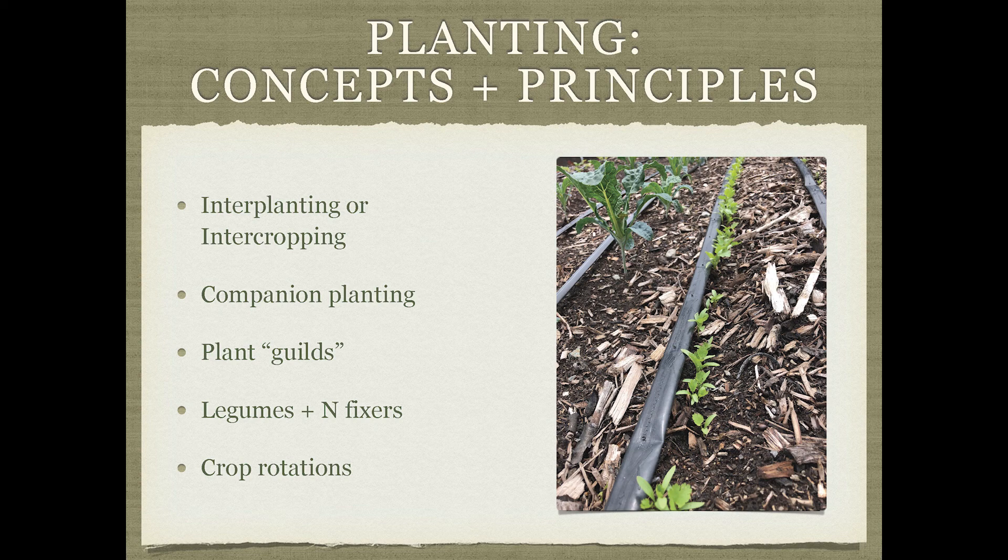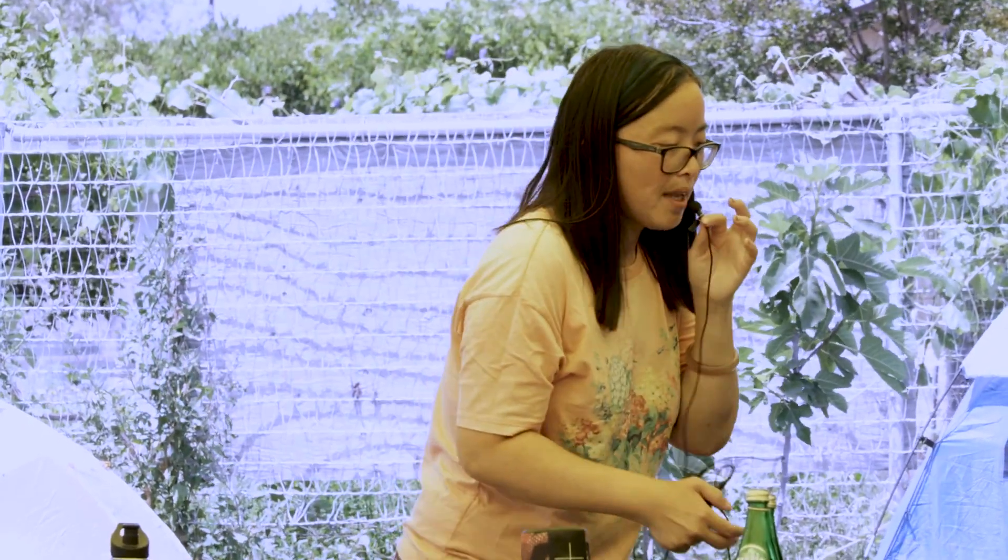Plant guilds go beyond companion planting — thinking about four or five plants together that interact in mutually beneficial ways. One might have a long taproot, another more shallow and spread out, pulling up different mineral profiles. One may be a nitrogen fixer, another a pollinator plant or nectar provider. Putting them together supports each other. We also talk a lot about climate-adapted plants in this region, especially due to drought — plants that don't need a ton of water, either native to this area or from similar mediterranean climates.